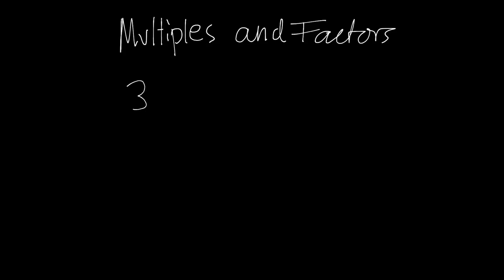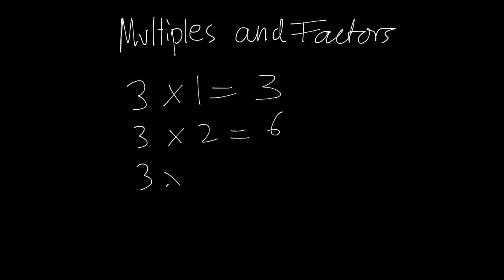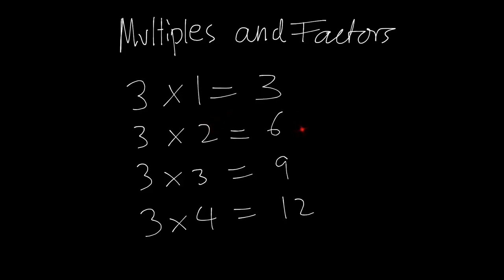So let's say we're going to do multiples of 3. 3 times 1 is 3. The second multiple would be 3 times 2, which is 6. 3 times 3 is 9. 3 times 4 is 12, and so on. You can do this for any number, and that will be its times table, or its multiples.